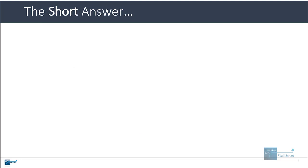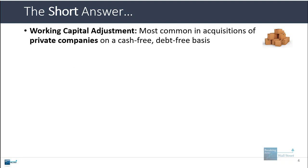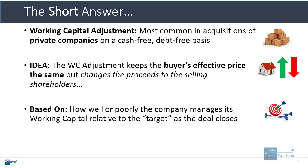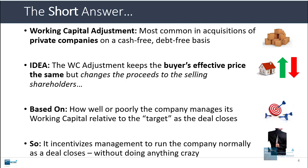Here is the very short answer: the working capital adjustment is most common in acquisitions of private companies done on a cash-free, debt-free basis. The idea is that it keeps the buyer's effective price the same, but it changes the proceeds to the selling shareholders of the target company. It changes the price based on how well or how poorly the company manages its working capital relative to the targeted working capital as the deal closes — incentivizing management to run the company normally without doing anything unusual.